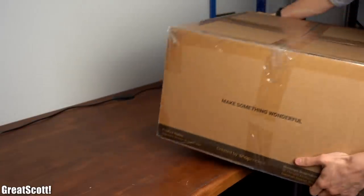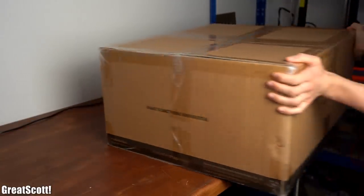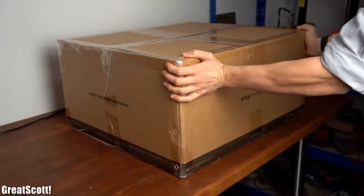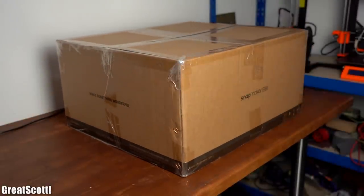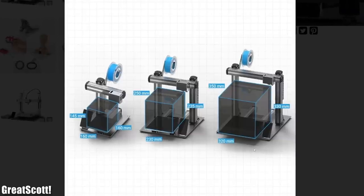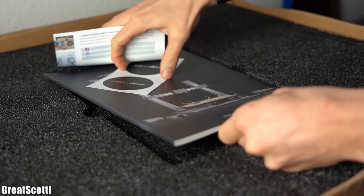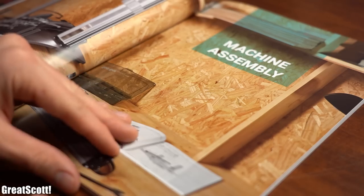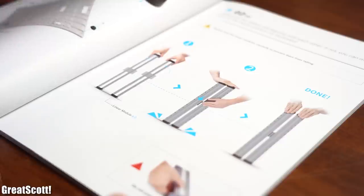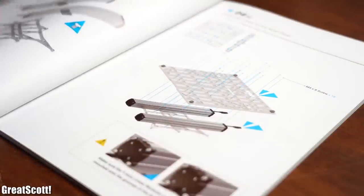Before that though it was time to bring in the big package of the Snapmaker 2.0 A350 which is the version with the biggest build platform. After opening it up I was greeted with the manual which in hindsight was very well written, detailed and easy to follow.